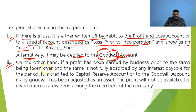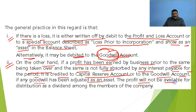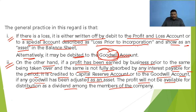Second situation: on the other hand, if profit has been earned by a business prior to the same being taken over, and the same is not fully absorbed by any interest payable for the period, it is credited to capital reserve account. If there is a profit in these types of cases, it will be transferred to capital reserve account, or it will be adjusted if goodwill account is already appearing in the books of company as an asset. The profit will not be available for distribution as dividend among the members of the company. The profit belonging to the pre period is not available for free distribution to shareholders of the company.